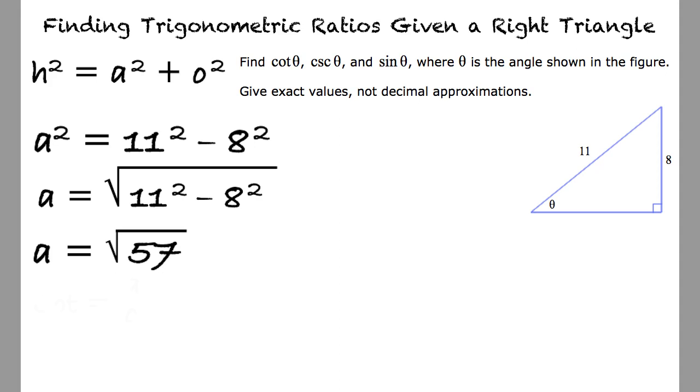Cotangent is the inverse of tangent, thus adjacent over opposite, which equals the square root of 57 over 8.